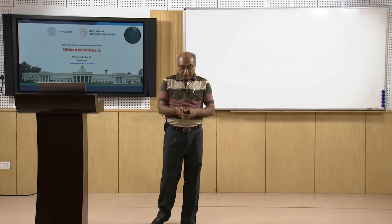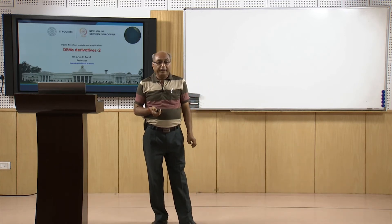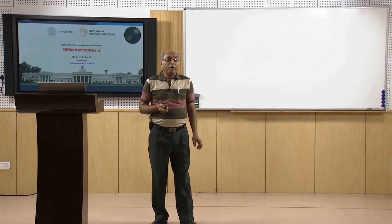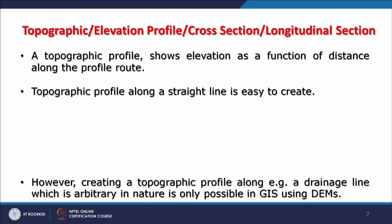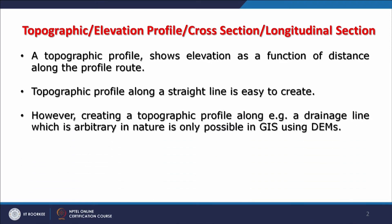For example, you can create a topographic profile along a drainage line, which is generally an arbitrary line or polyline. A topographic profile along a straight line is easy to create even using contours from a topographic map, but creating a profile along an arbitrary line is possible using DEMs in a GIS platform.